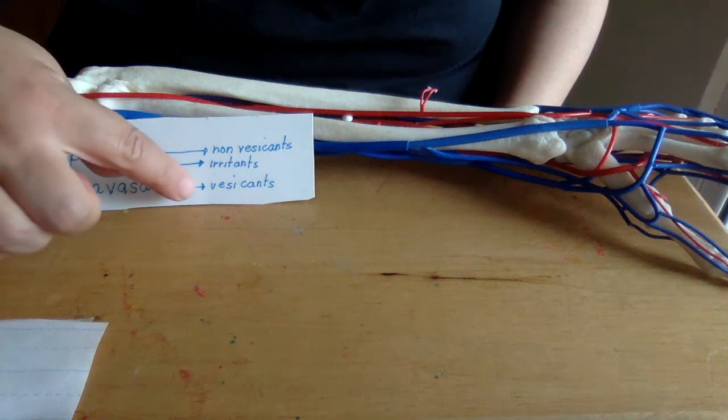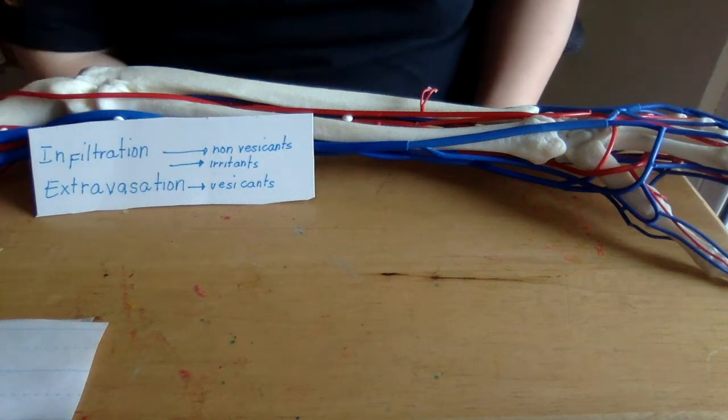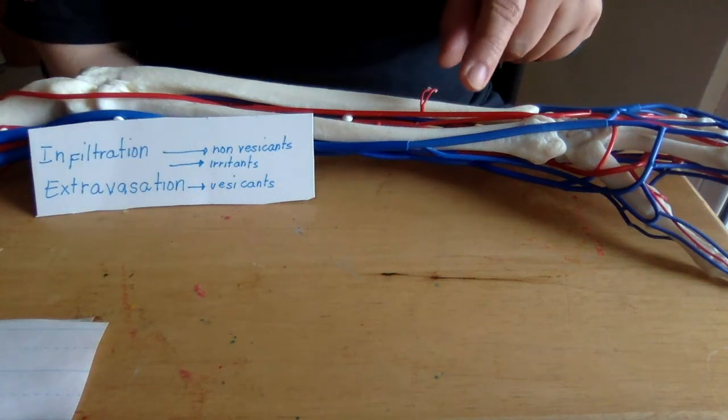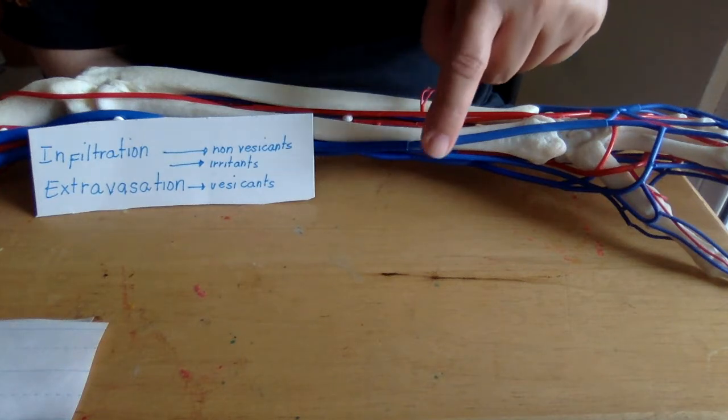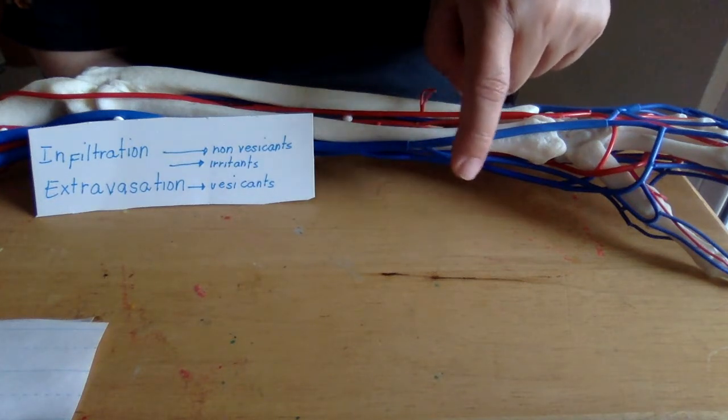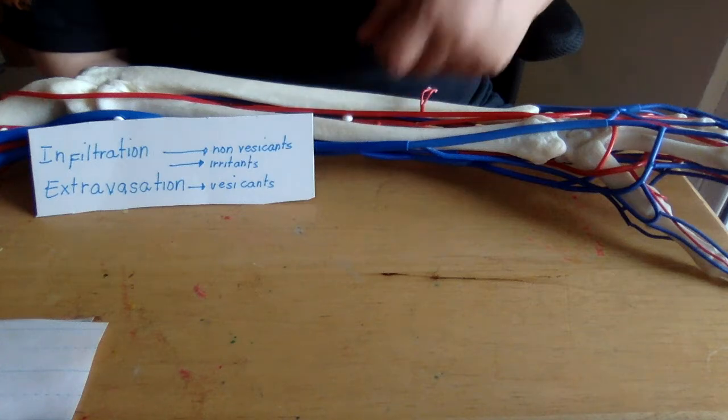For vesicants, these can cause severe tissue damage of the skin, the surrounding vasculature, and supporting vessels.